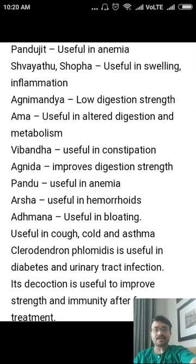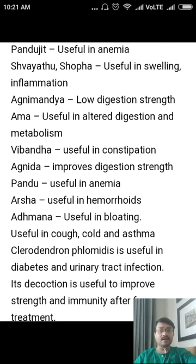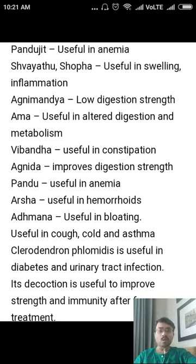Considering its therapeutic indications: it is mentioned as Pandujit — useful in anemia. Shotha — useful in swelling, edema, and inflammatory conditions. Agnimandya — useful in cases of low digestion strength. Ama — useful in altered digestion and altered metabolism. Vibandha — useful in constipation. Agnida — it improves digestion strength. Pandu — useful in anemia. Arsha — useful in hemorrhoids or piles. Adhmana — useful in bloating or gaseous distension of the abdomen. It is also useful in cough, cold, and asthma.